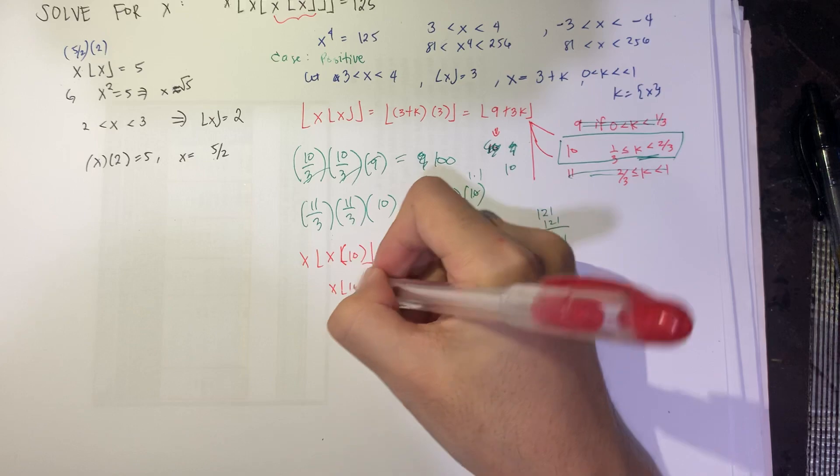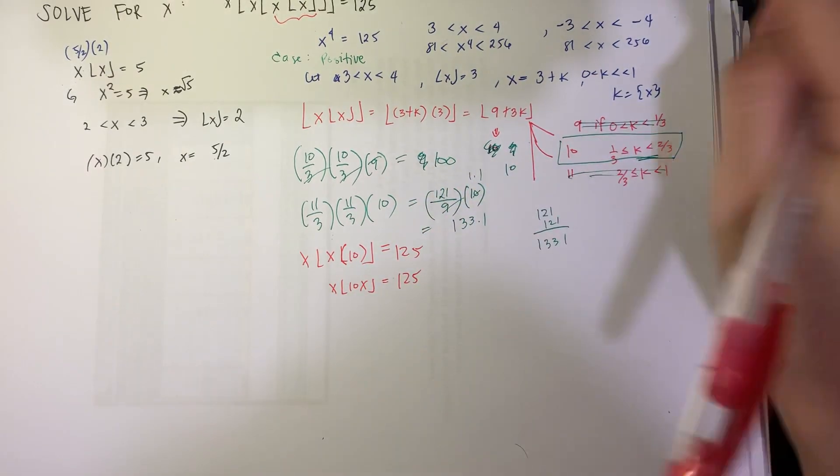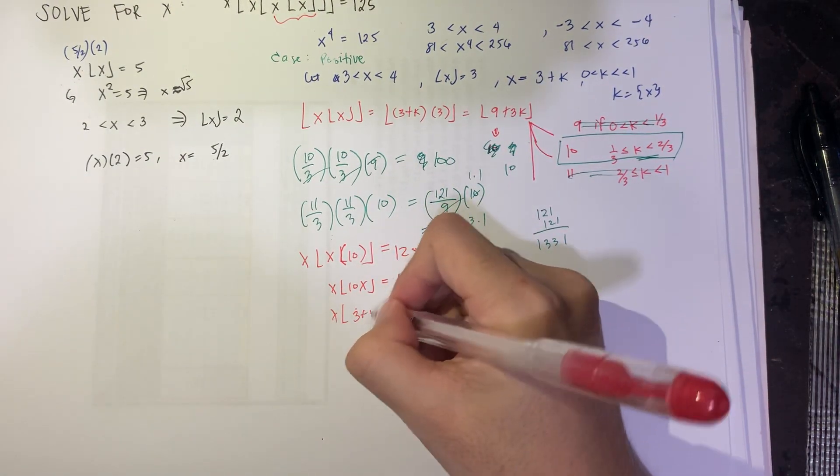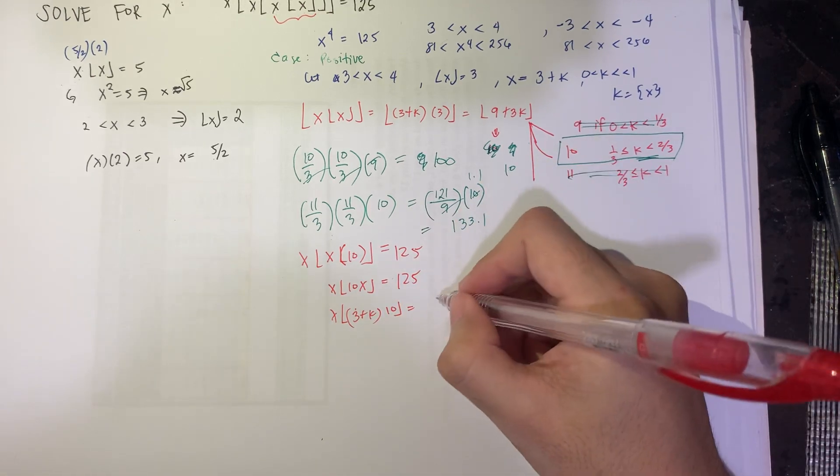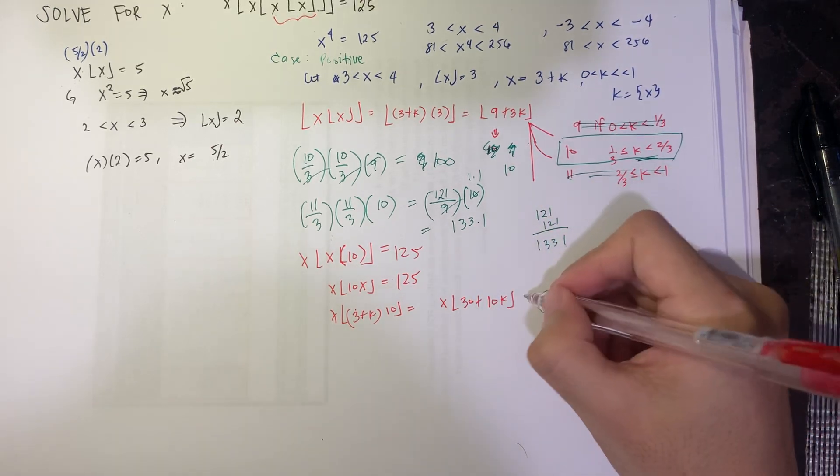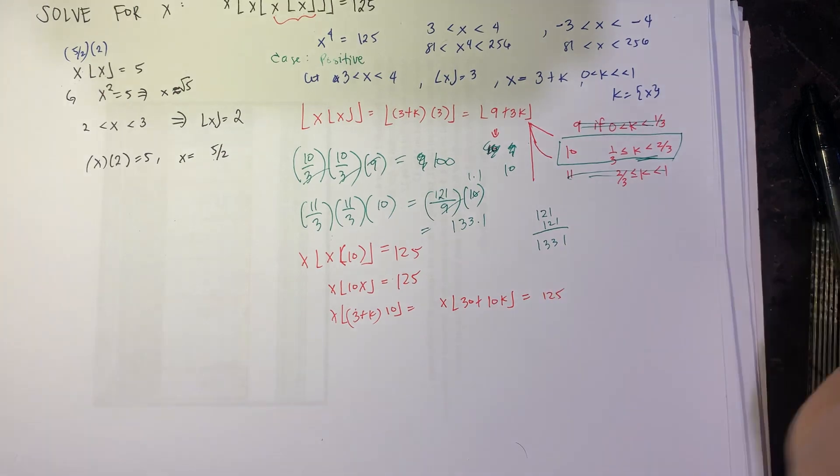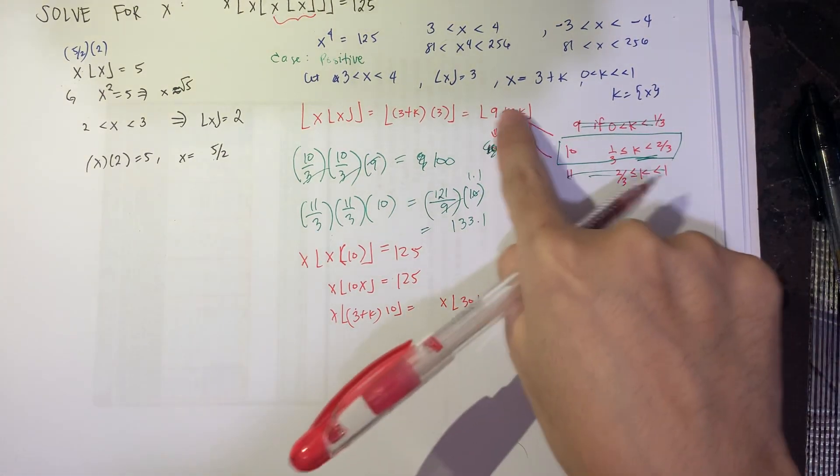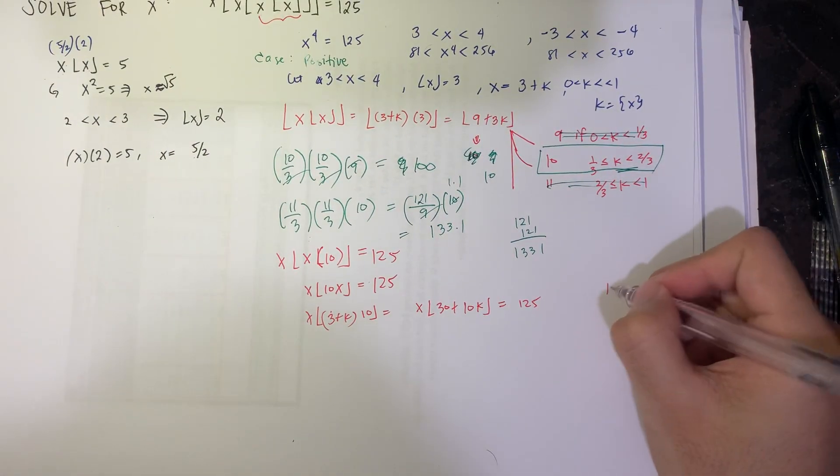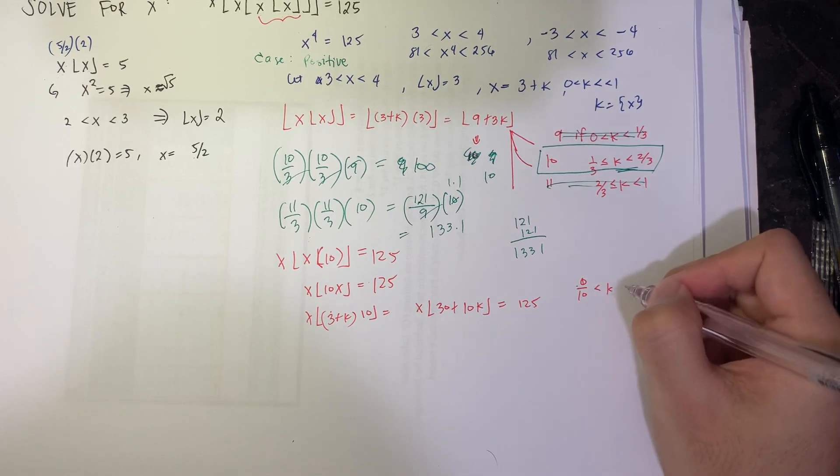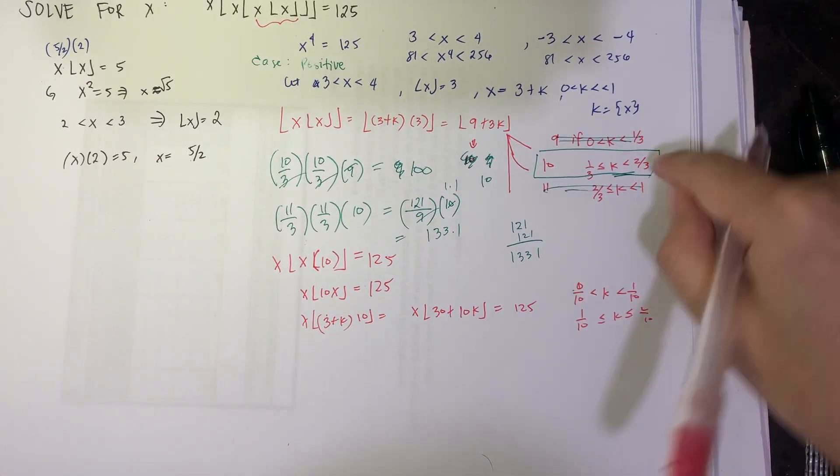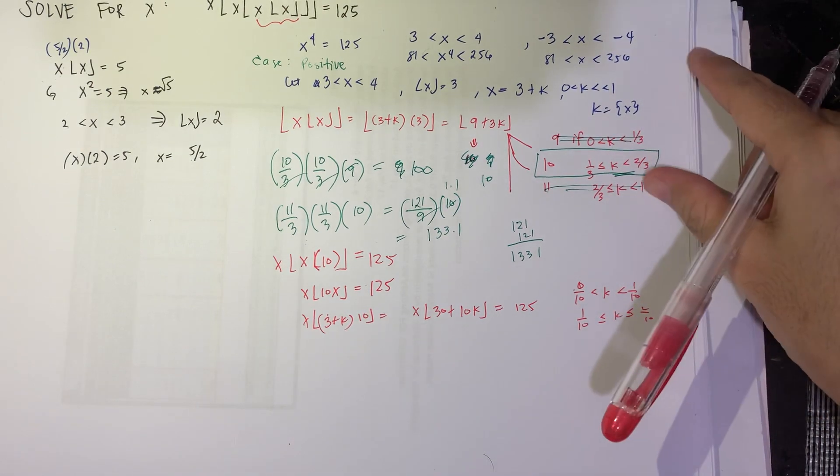Okay. So we again do the same. Since x is still 3 plus k, 3 plus k times 10 equals x times 10 equals floor of 30 plus 10k is equal to 125. Again, we have something like this. This is the case a while ago. You can have many values for this one as well, depending on where k is. K is between 0 over 10 to 1 over 10, 1 over 10 to 2 over 10. But I won't list all of them. Why? Because we have already established that k is between 1 thirds and 2 thirds.